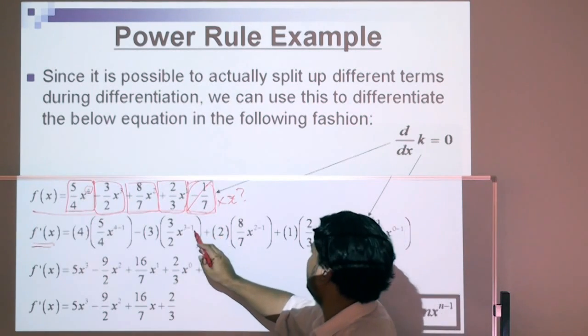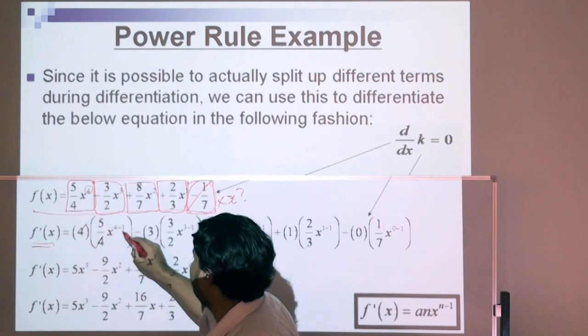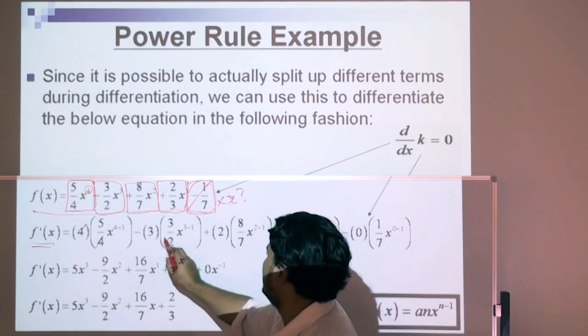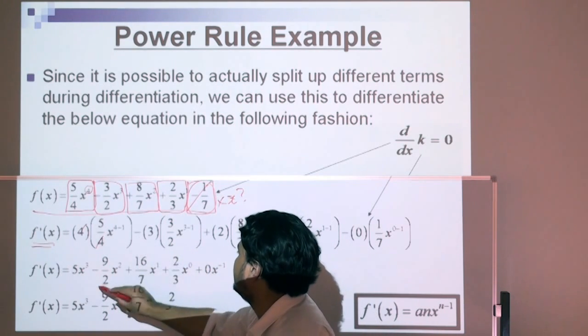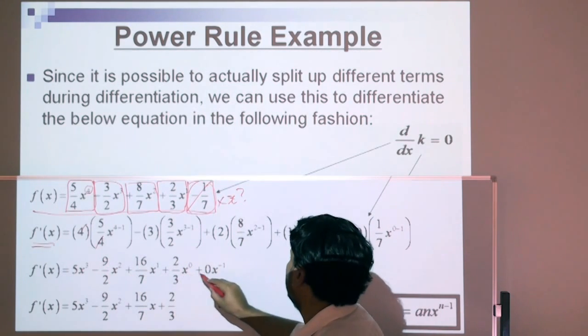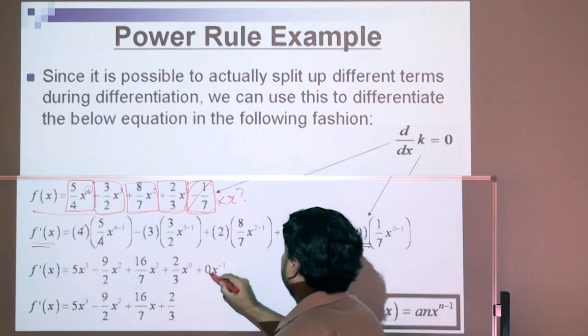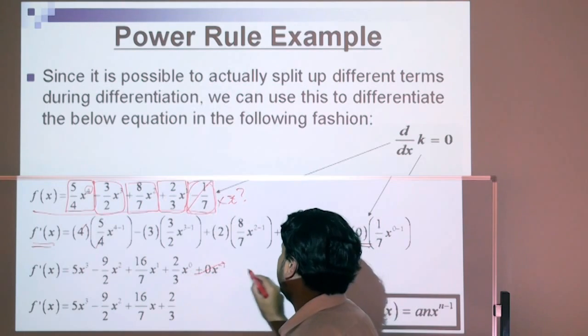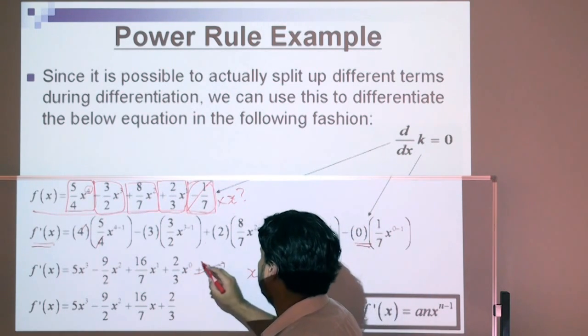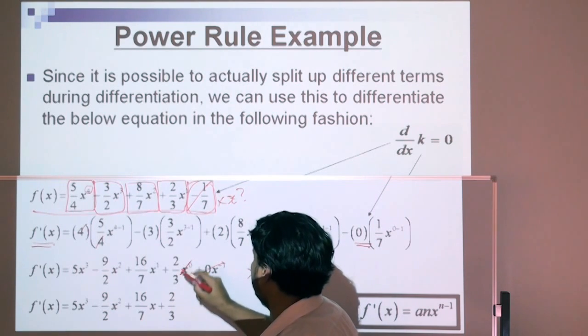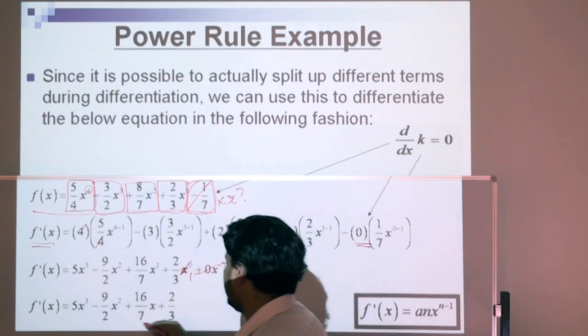We do that for each, and then after we multiply 4 times 5, that 4 cancels out, that's 5x to the power of 3. 3 times 3 is 9, 9 over 2, 3 to the power of 1 is 2, minus 9 over 2 x squared, and so forth. Notice that that becomes 0 over here, the constant rule, 0 times anything equals 0. Remember that x to the power of 0 is equal to 1, so that value becomes multiplied by 1, which stays at 2 over 3.